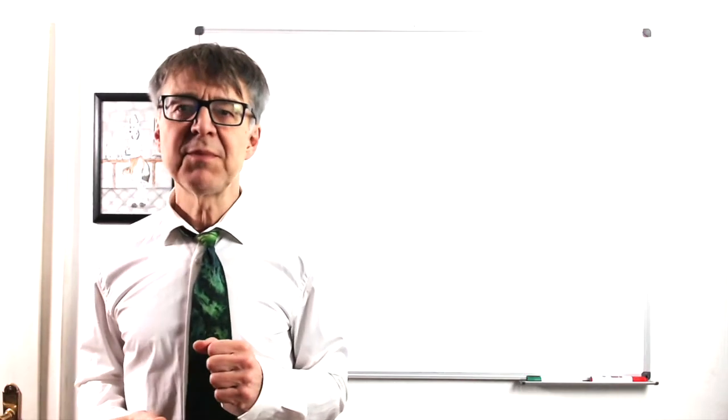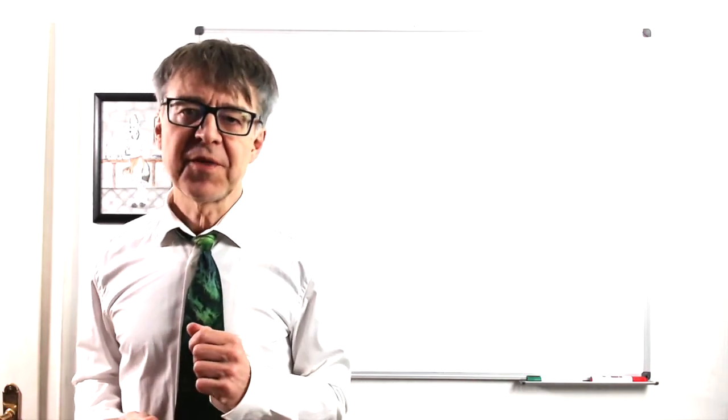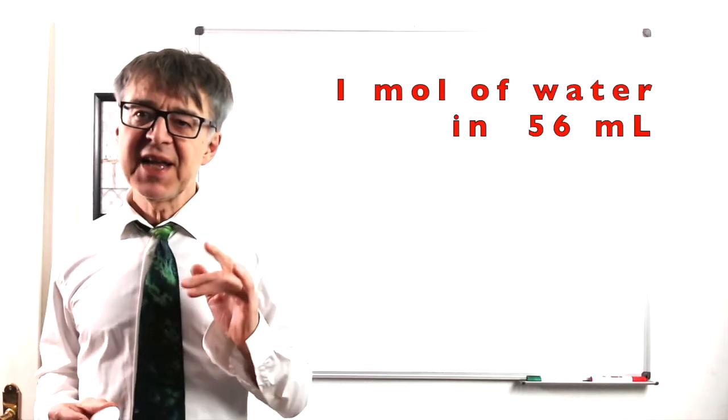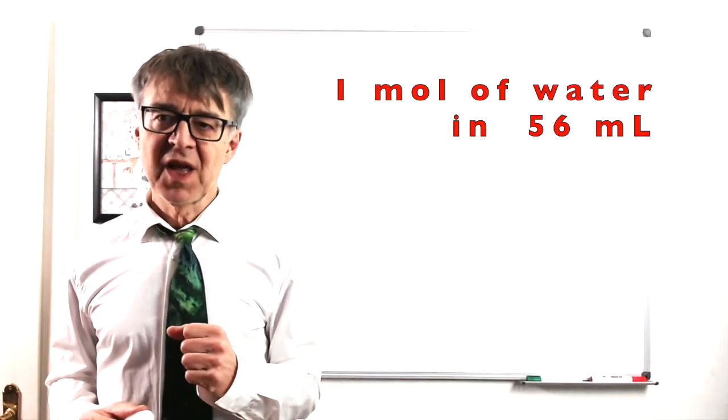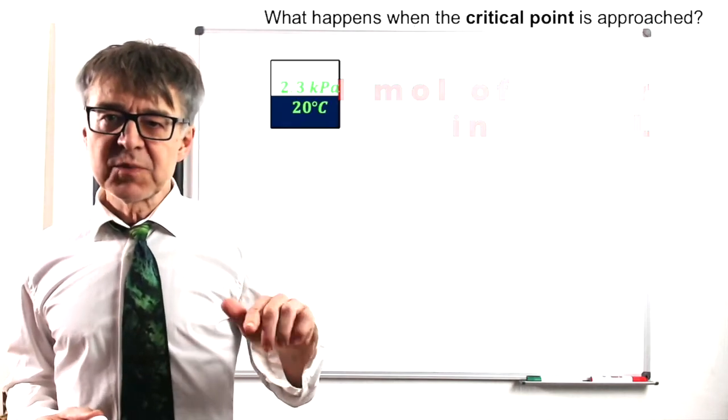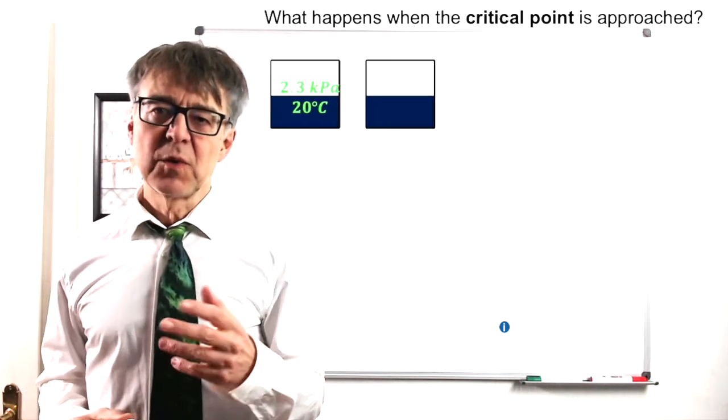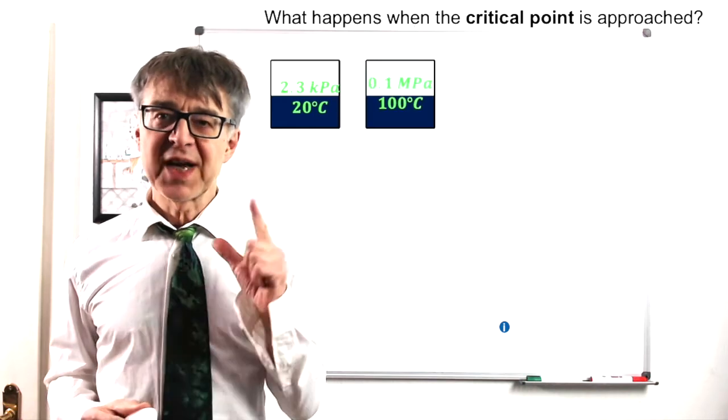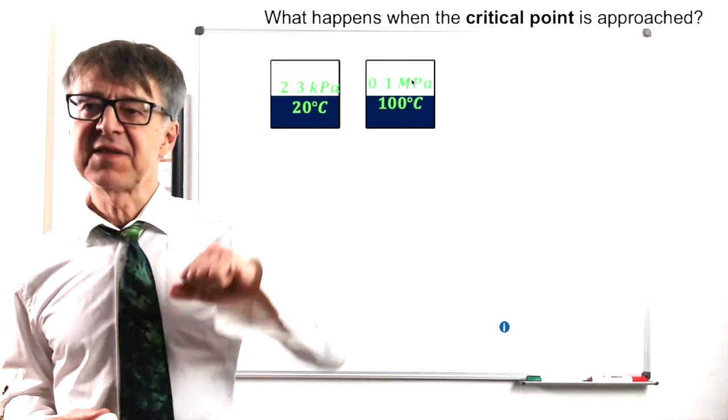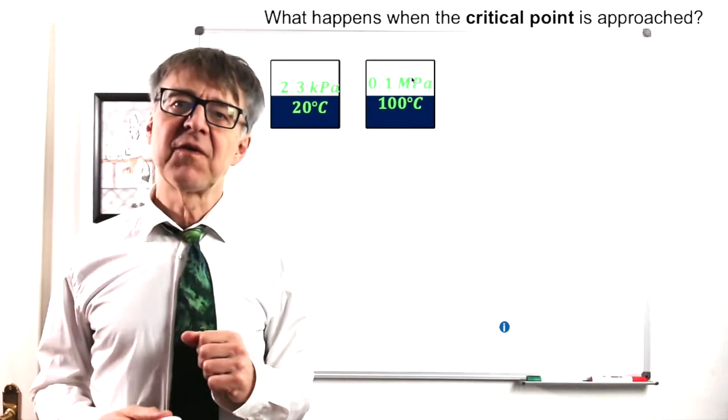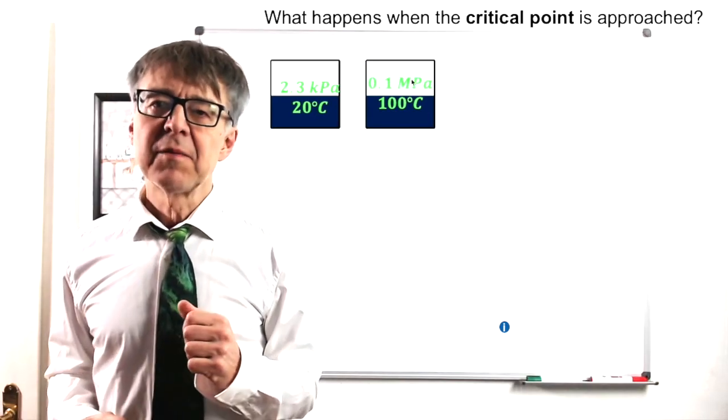One more experiment to show the importance of the critical point. Let's take an empty evacuated container with a volume of 56 milliliters and fill in 18 grams of water. We heat the system to 100 degrees Celsius. What will we get? Well, we'll get two phases. A liquid phase below, a gaseous phase above, and a pressure of 0.1 MPa.